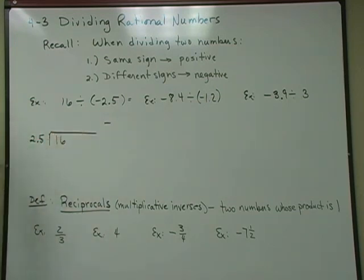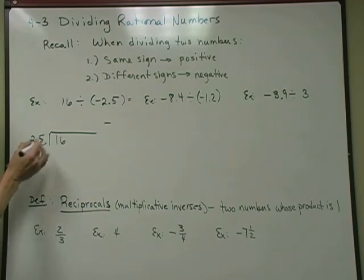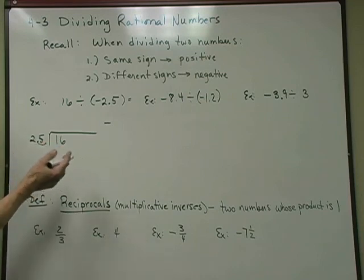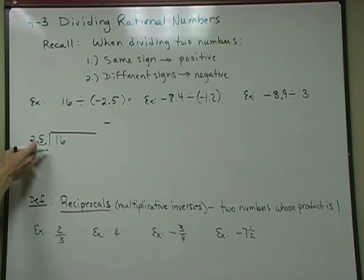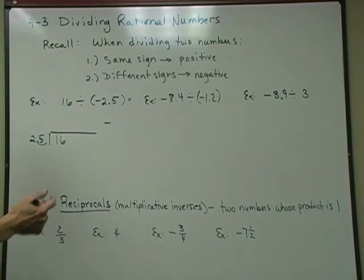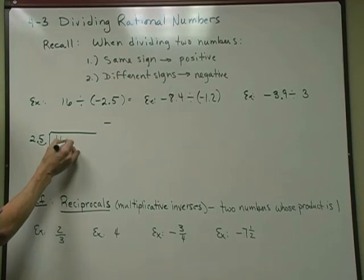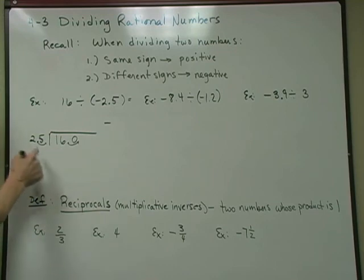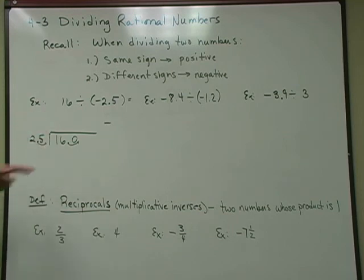You can't divide by a number that has a decimal, so I need to change this to a number without a decimal by sliding the decimal point one place to the right, which is like multiplying by 10. But I've changed the problem — I'm not dividing 16 by negative 2.5 if I change the 2.5 to 25. I have to make a corresponding change. 16 is the same as 16.0 — I'll add a zero for a placeholder and move it one place. If I move this one, I move this one.